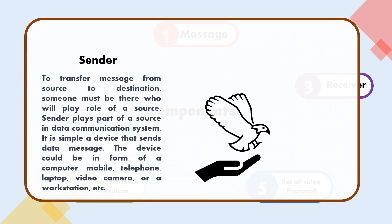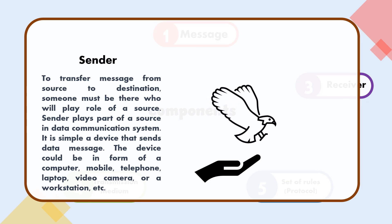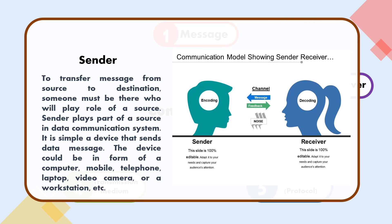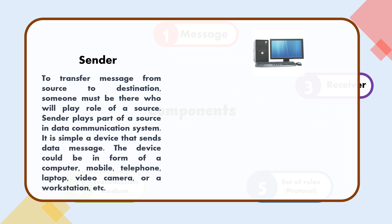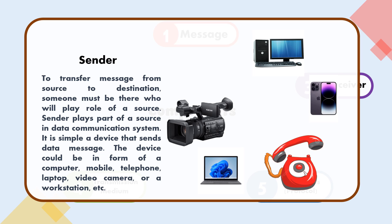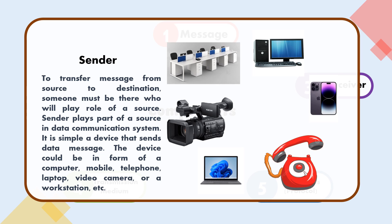To transfer a message from source to destination, someone must be there who will play the role of a source. The sender plays the part of a source in a data communication system — it is simply a device that sends a data message. The device could be in the form of a computer, mobile, telephone, laptop, video camera, or a workstation, etc.